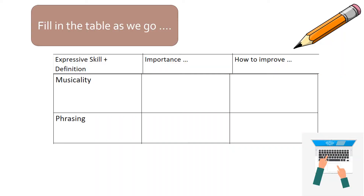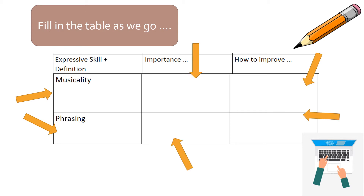We've learned a lot about modern dance and we can continue to learn about Limón, his technique, and him as a pioneer. We're now going to move on to our expressive skills and fill in our table. You should already have focus, projection, sensitivity to other dancers, and spatial awareness filled in. Today we're going to do musicality and phrasing - write the definitions on the left, importance in the middle, and how to improve on the right. Pause the video now if you need to sketch out that table.